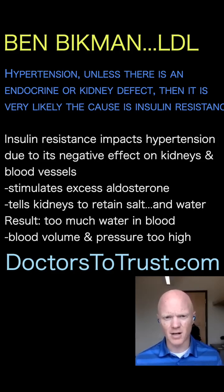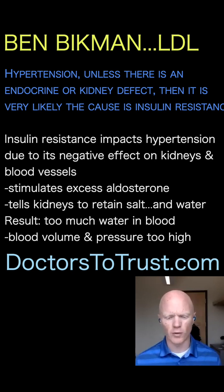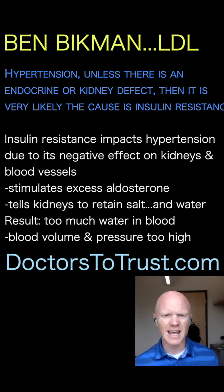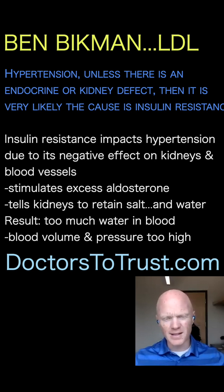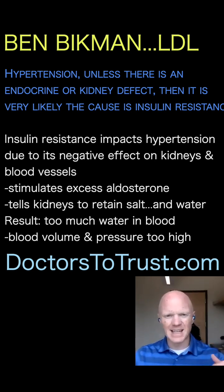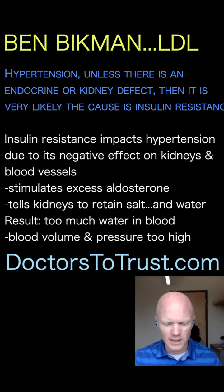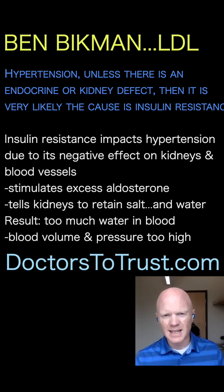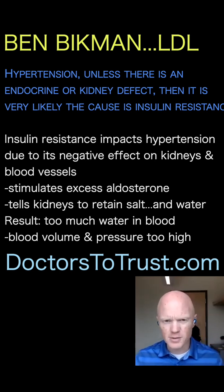Insulin resistance is the cause of most instances of primary hypertension, the most common form of hypertension. So if you have hypertension, it's probably insulin resistance. Insulin resistance has a broad effect on causing hypertension at the level of the kidneys and blood vessels — including the caliber and diameter of the blood vessels. High insulin will also stimulate a hormone called aldosterone to be over-secreted.